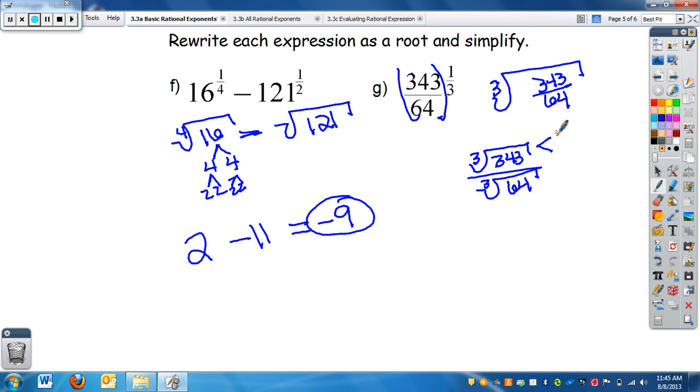343, I believe, is divisible by 7, which makes this 49, and then I have 7 and 7. So my numerator I have 7. And down here, I can go 8 and 8, 2 and 4, 2 and 4, 2 and 4, 2 and 2. So I get 2s and 2s, which is 4, so it's 7 fourths.